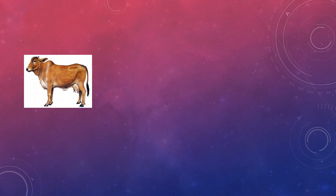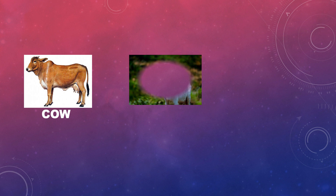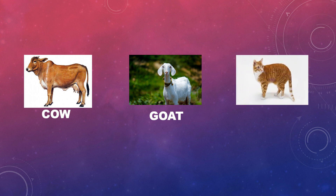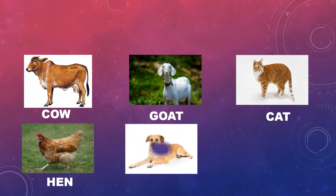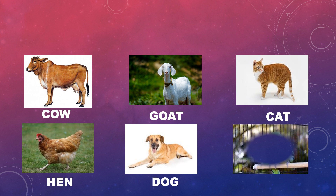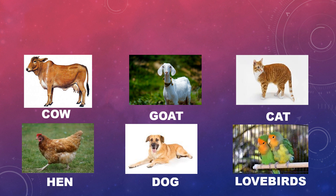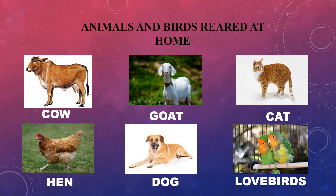Observe these animals: fish, cow, goat, cat, hen, dog, and lastly, love birds. Can you find anything common among them? Yes, you are right. These are the animals we keep at home. Animals like cow, goat, cat, hen, dog and love birds are reared at home.